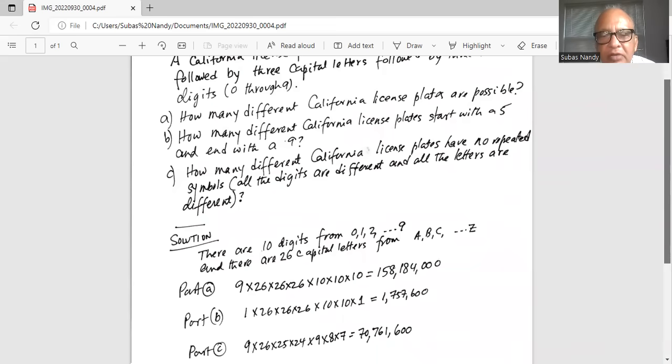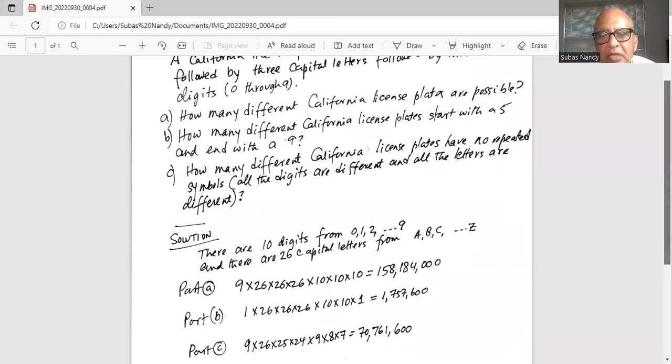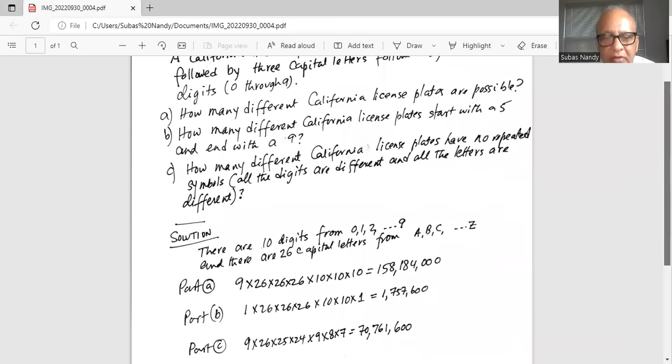So the whole thing multiplied together is 158,184,000 possibilities. These are possibilities in which you can combine these combinations of letters and digits.